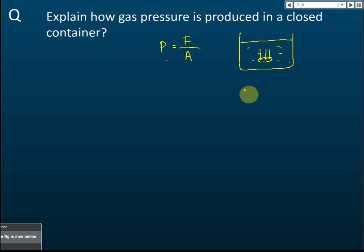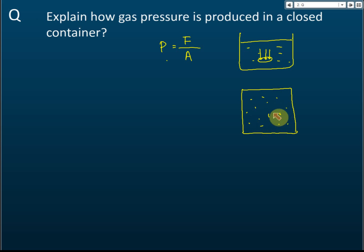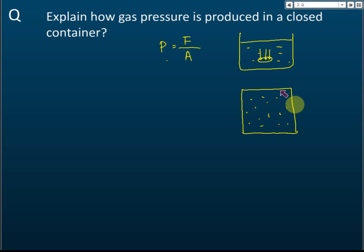Now, how about a container that contains gas? Some students think that gas pressure in a container is caused by the weight of the gas, but that is not true. The weight of the gas is very small, yet the pressure caused by the gas is very large — so gas pressure cannot simply be caused by the weight of the gas.